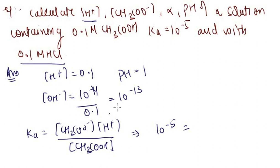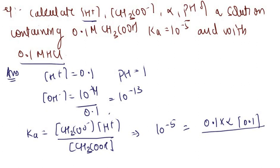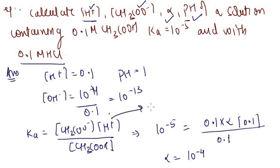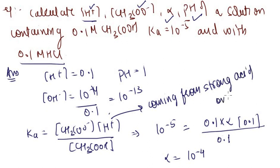For the acetate ion: Ka = [H⁺][CH₃COO⁻]/[CH₃COOH]. Ka = 10⁻⁵, [H⁺] = 0.1 M, [CH₃COOH] = 0.1 M. So [CH₃COO⁻] = Cα. Solving: alpha = 10⁻⁴. Keep in mind that H⁺ is coming from the strong acid only.